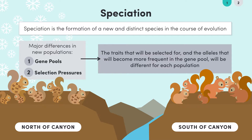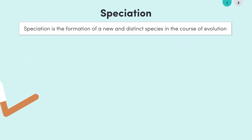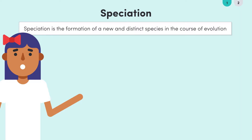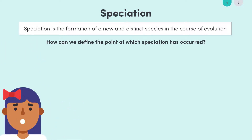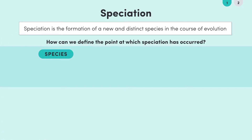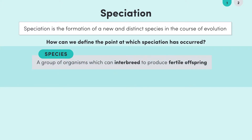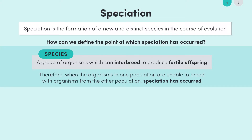So the gene pools of each population are getting increasingly different. But how do we reach the point where we can say that the gene pool of a population has changed enough to be called a new species? How can we define at which point speciation has occurred? The term species is quite a fluid word, but we tend to say that organisms from the same species are those that are able to interbreed to produce fertile offspring. When organisms in one population are unable to successfully breed with organisms from the other, we say speciation has occurred and a new taxonomic group has been formed. We can do this by comparing the gene pools of the populations we're interested in.